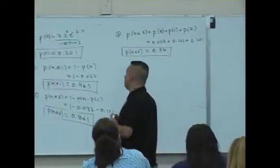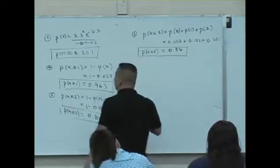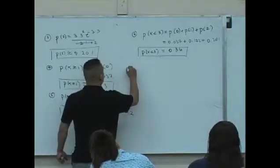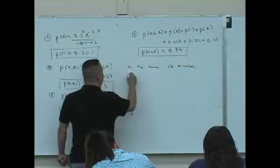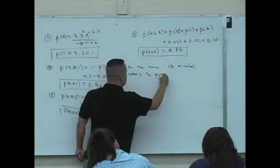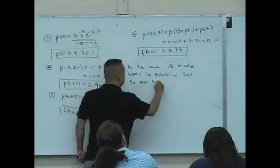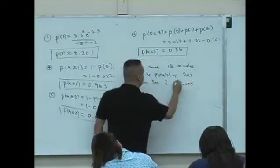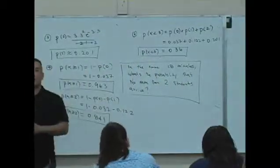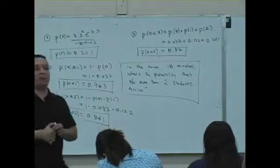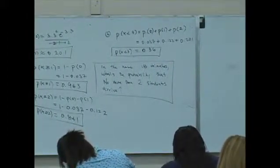I'll give you a few more minutes, and then we're going to move on to the normal distribution. I'm going to ask you this follow-up question, just to see if you guys are awake: in the next 18 minutes of a typical office hour, what's the probability that no more than two students arrive? We'll give you some time to do that — see if you can put these things together. Then we're going to move on to the normal distribution.